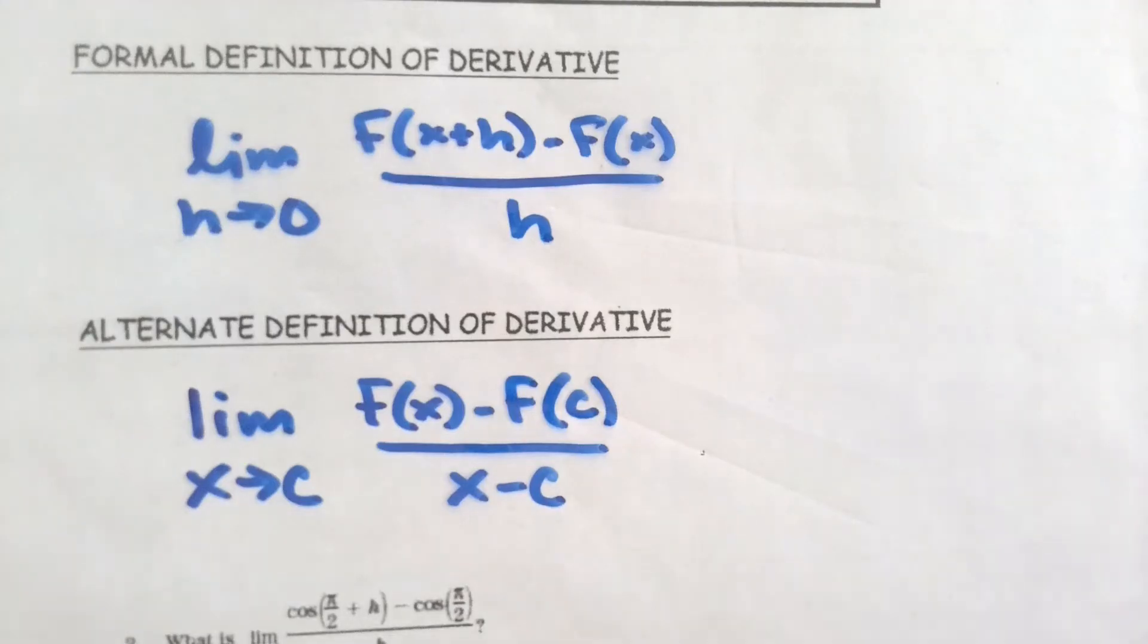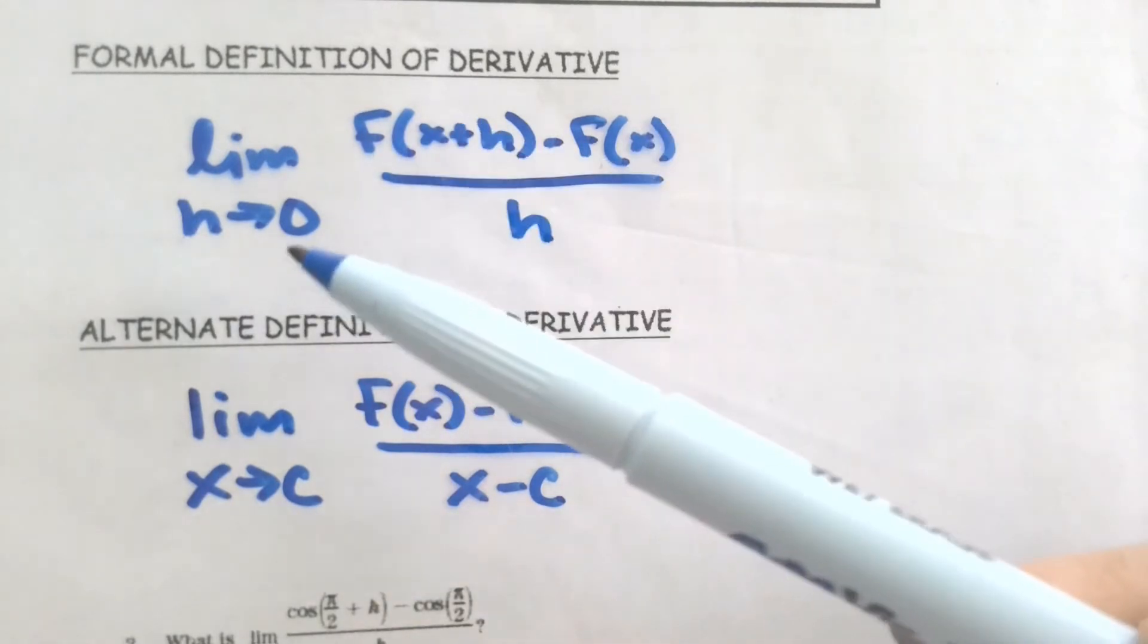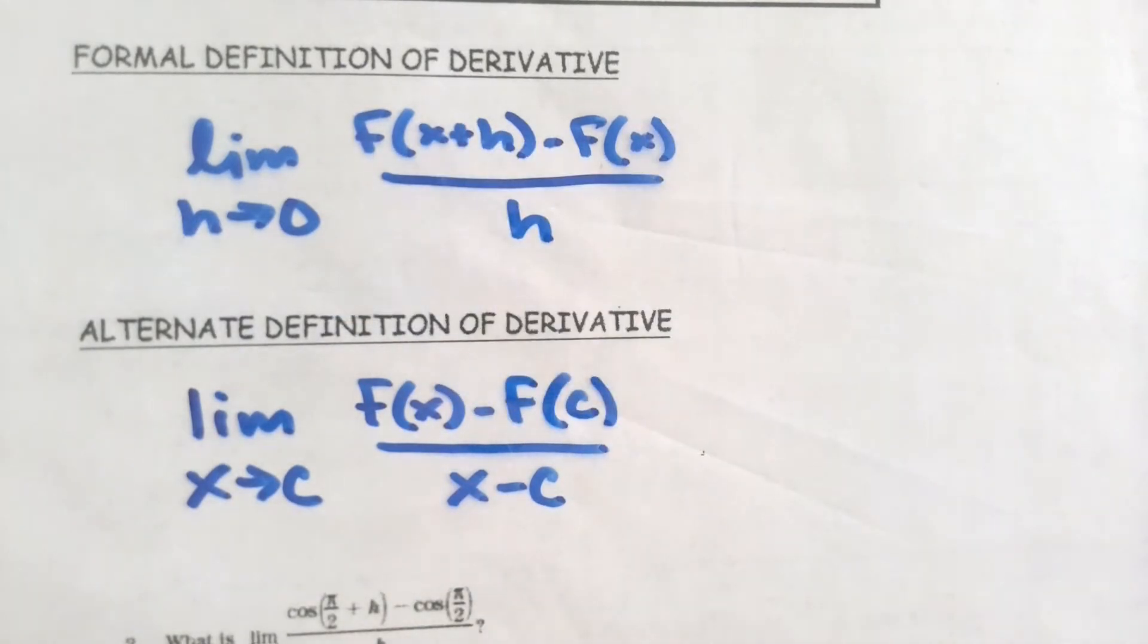First, I want us to recall the formal definition of our derivative, that initial limit with the difference quotient that we looked at, and then also our alternate form for a derivative that is only talked about when we're looking at a specific value.